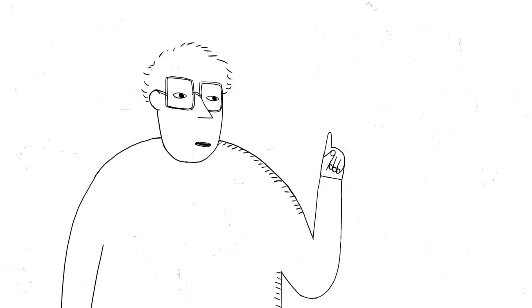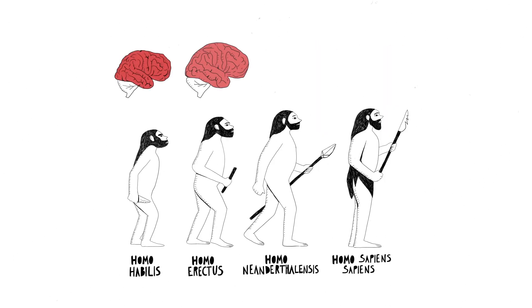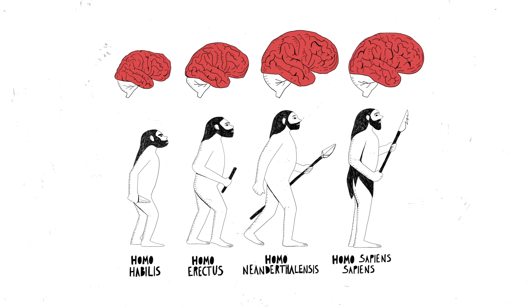Language may have begun to take shape during the Pleistocene, 2 to 3 million years ago, with the emergence of the genus Homo that eventually gave rise to our own species, Homo sapiens. Brain size tripled, and bipedalism freed the hands for communication.